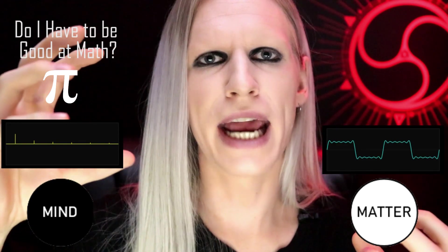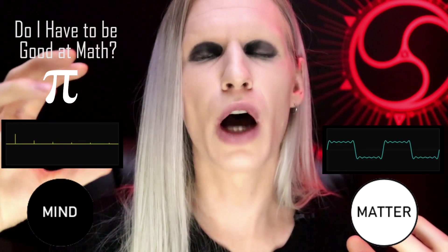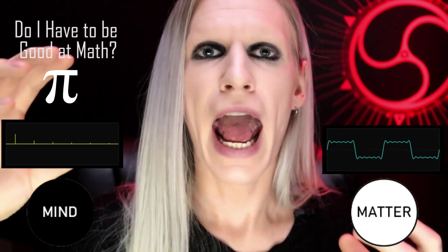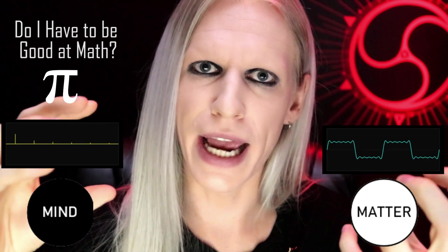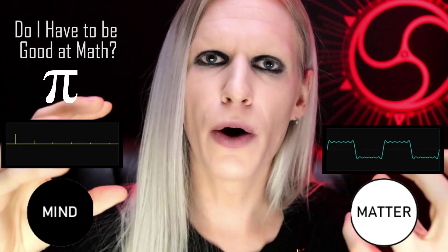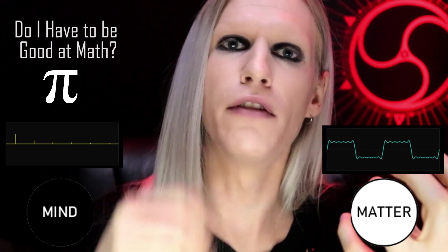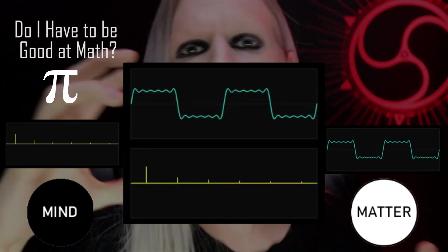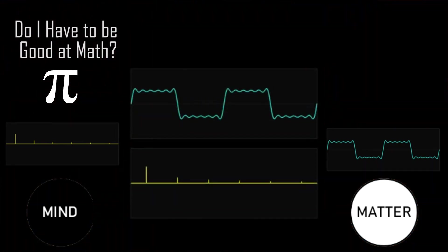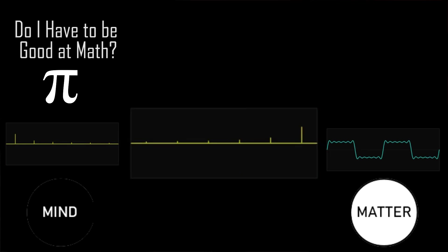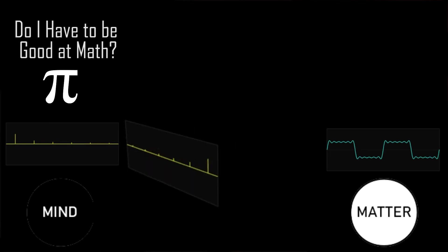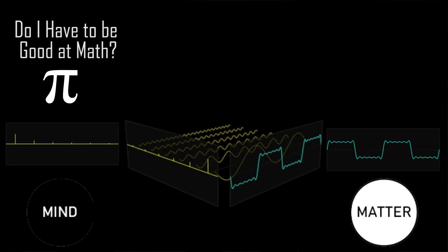The frequency domain is composed of basis waves. And the space-time domain is composed of the additive result of those waves. So it's two different ways of looking at the same information. On one hand, you have pure frequencies, and on the other, you have the additive result of those frequencies.